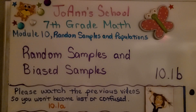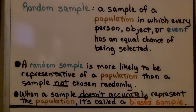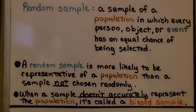Lesson 10.1b: Random Samples and Biased Samples. Let's start with some definitions. A random sample is a sample of a population in which every person, object, or event has an equal chance of being selected. A random sample is more likely to be representative of a population than a sample not chosen randomly. When a sample doesn't accurately represent the population, it's called a biased sample.